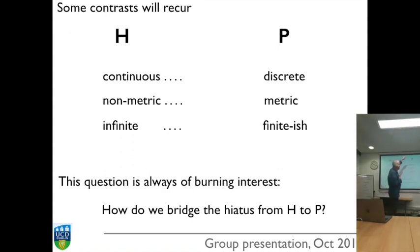In P we will have discrete things, separable things, and we can apply measurement, we can measure things, count them, distinguish them. There's a metricity to it. As we look at each contrast, the question I've always been getting at is how do we bridge the hiatus from H to P?